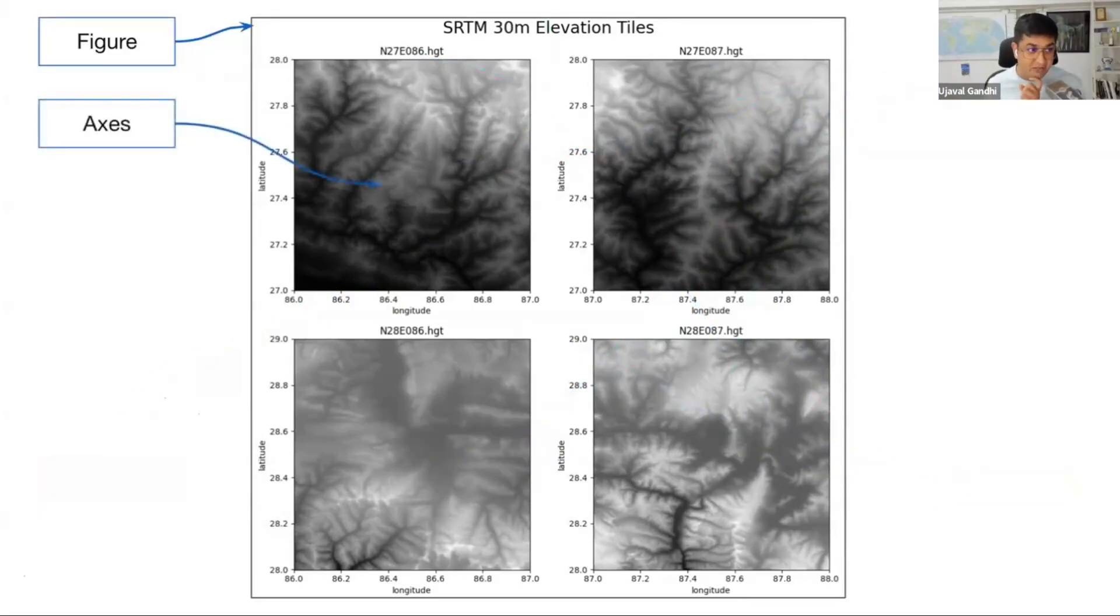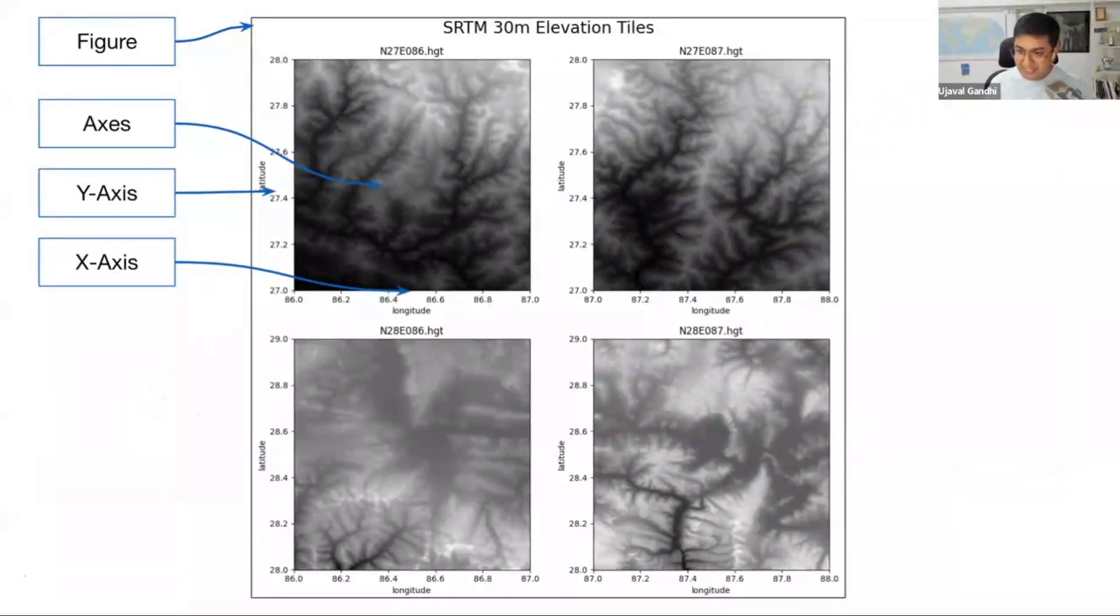So you have a figure, you have an axis. Within each axis, typically when you create a plot, you'll have an X and Y axis. This is AXIS. So X and Y axis. Another confusion when working with geospatial data: your longitudes are your X axis. Latitudes are Y axis. We say lat long, but that is Y and X. So longitudes are X axis, latitudes are Y axis.